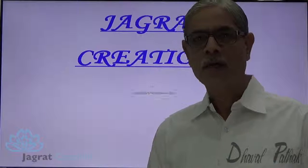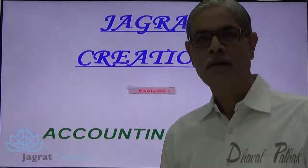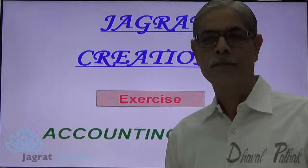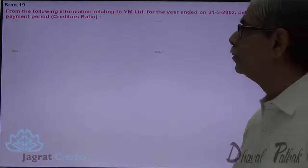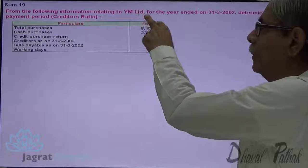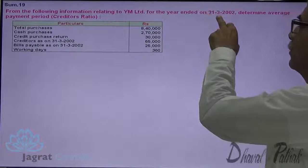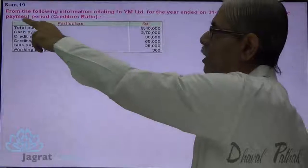Today I wish to consider one sum from the chapter on accounting ratios. The sum is from an exercise. Observe the sum on the screen. From the following information relating to IIM Limited for the year ended on 31st October 2002, determine the average payment period.